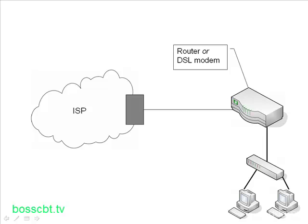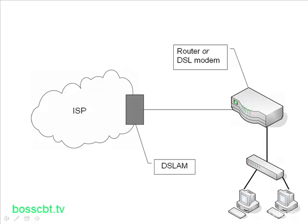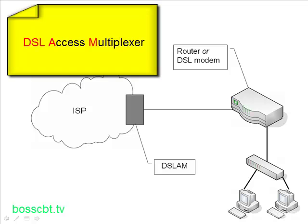We start off by having a router or a DSL modem — you can use either one. Usually the router has to be DSL-enabled, but there are a lot of options. The DSL modem or router will connect to a regular POTS line, just like an analog modem does. However, it needs to be enabled by your telecom provider for DSL, because on the other end of that POTS line is something called a DSLAM — DSL Access Multiplexer — which terminates the DSL service offered by your ISP or telco provider.